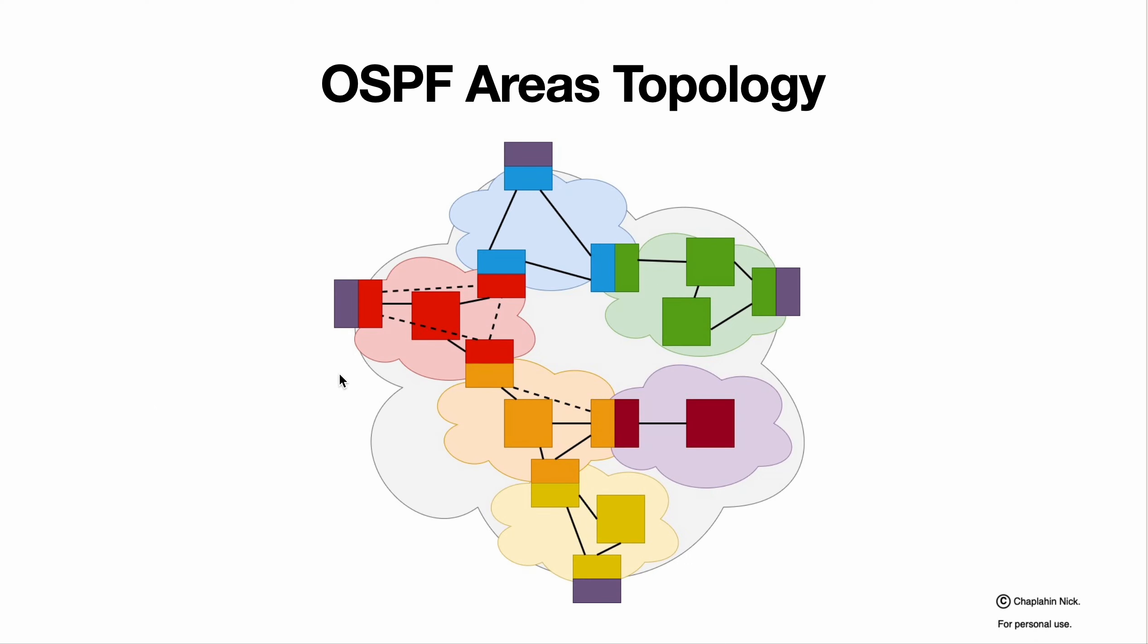As you remember from previous OSPF videos, OSPF areas topology contains all devices within our Autonomous System and OSPF areas and networks those devices connected to and links that connecting those devices between. Those could be physical links or virtual links.